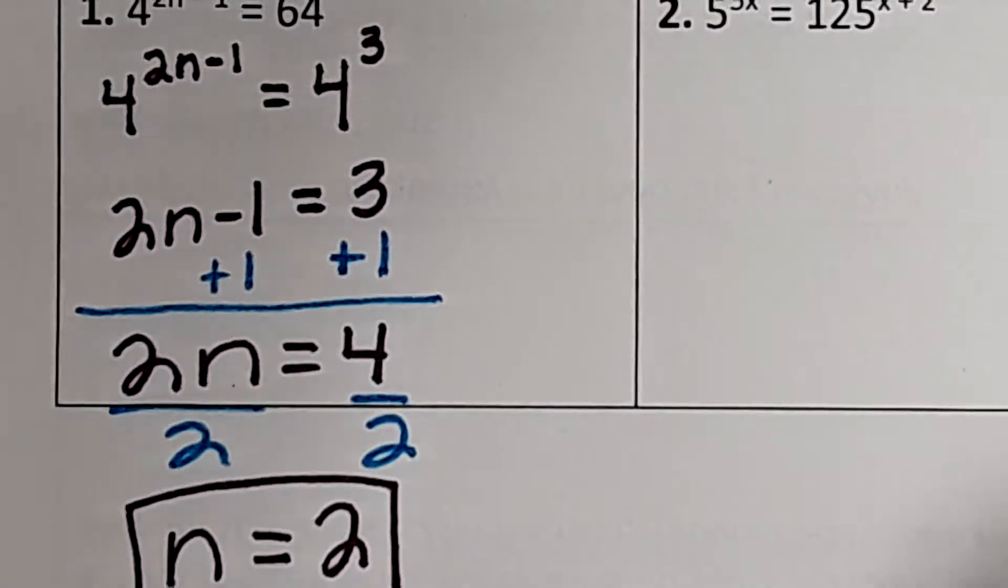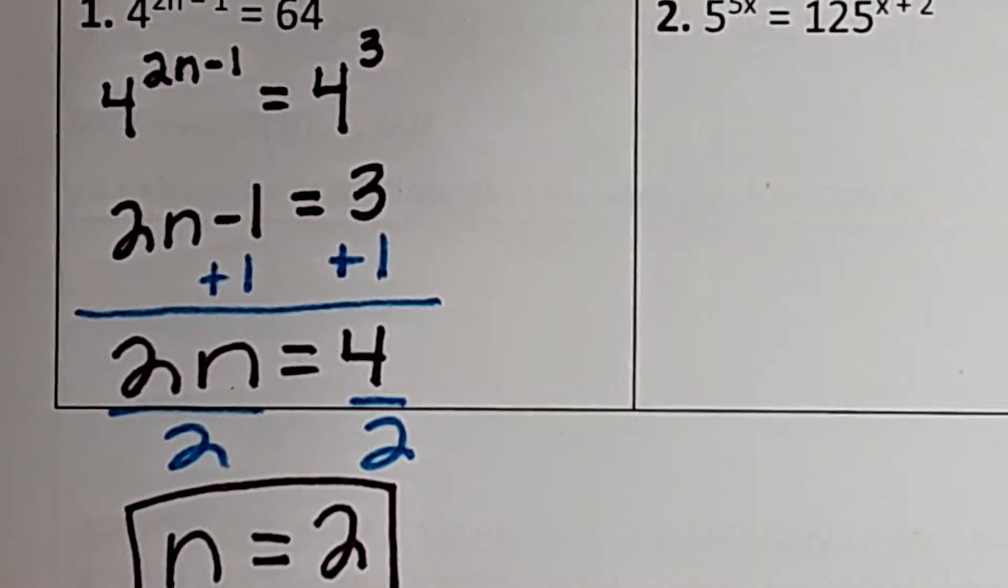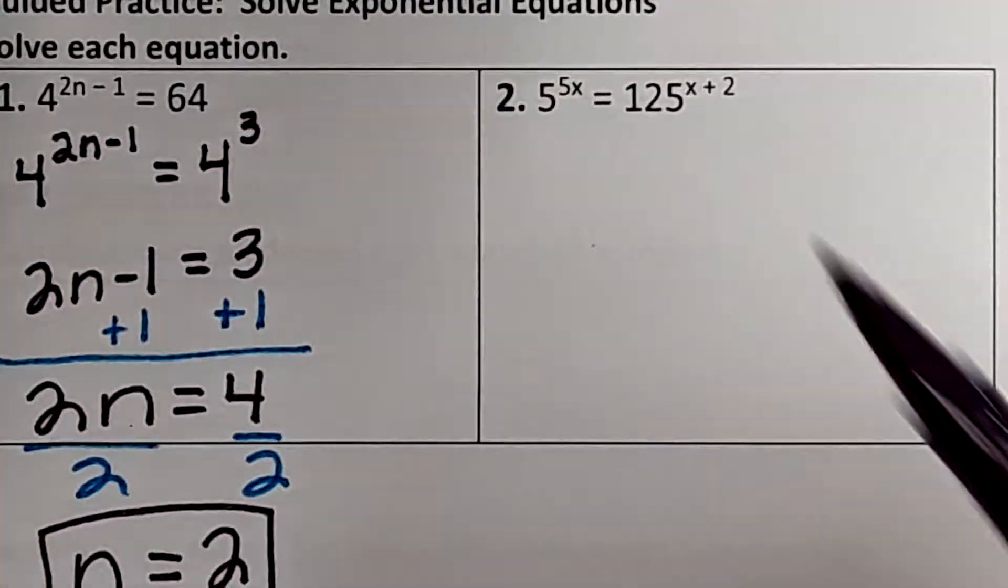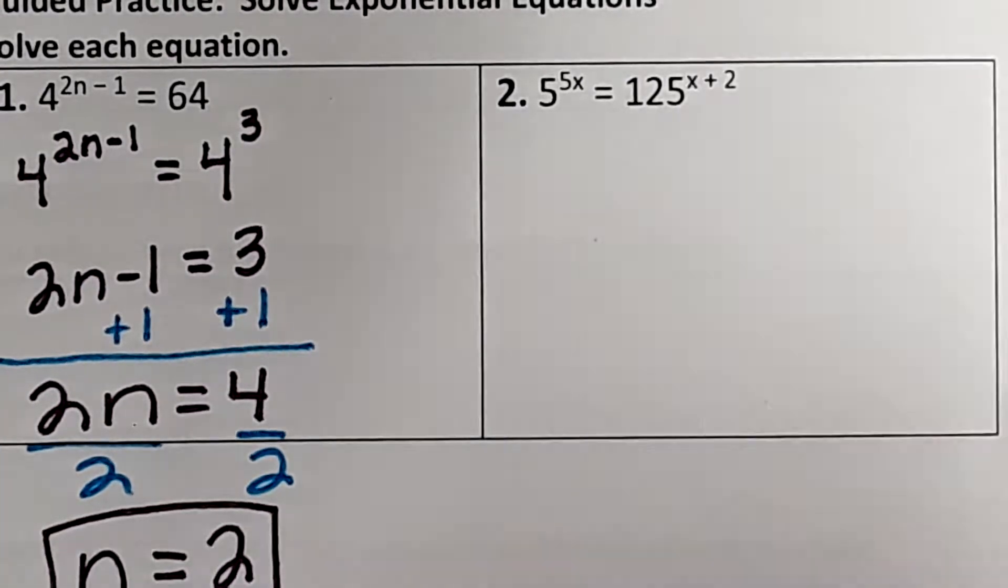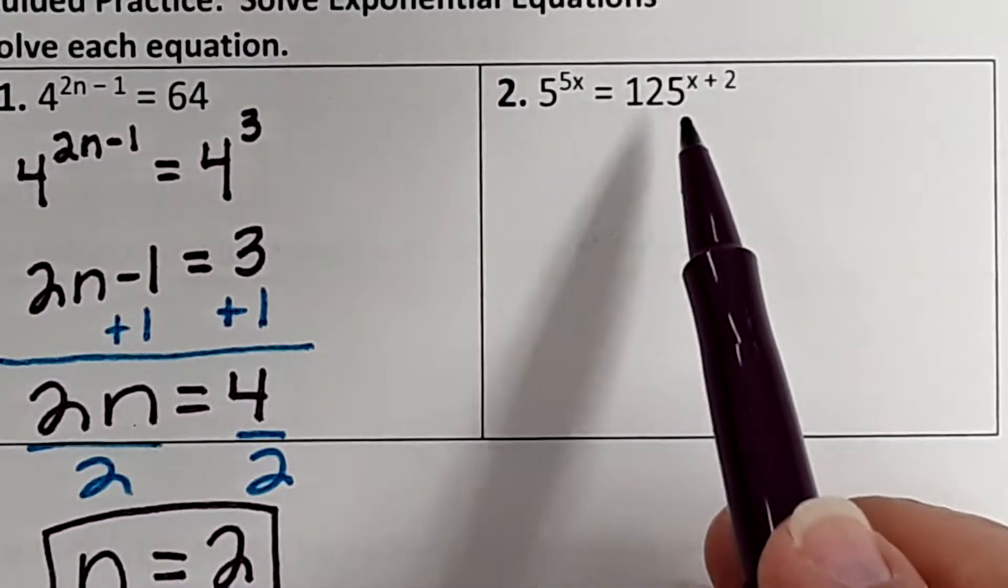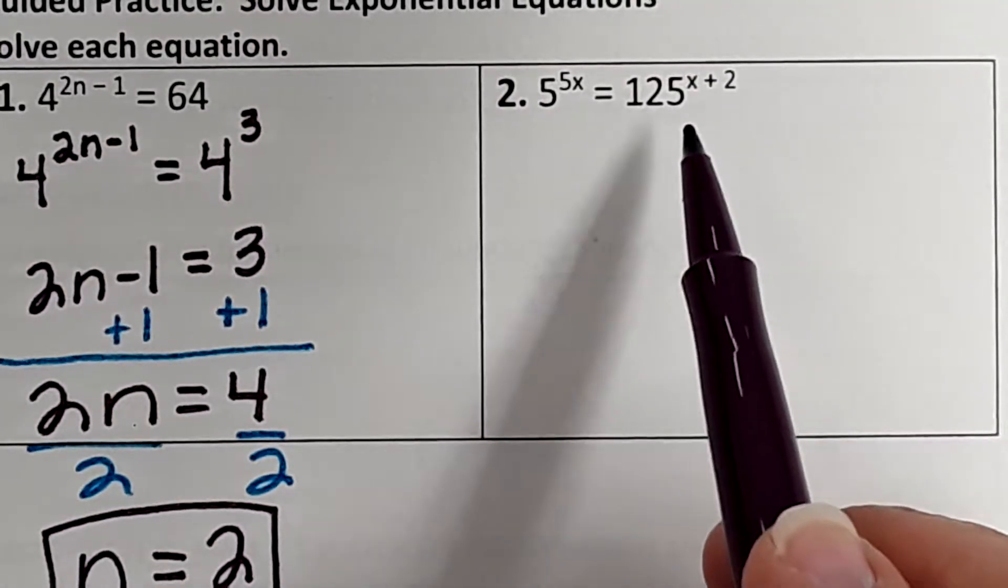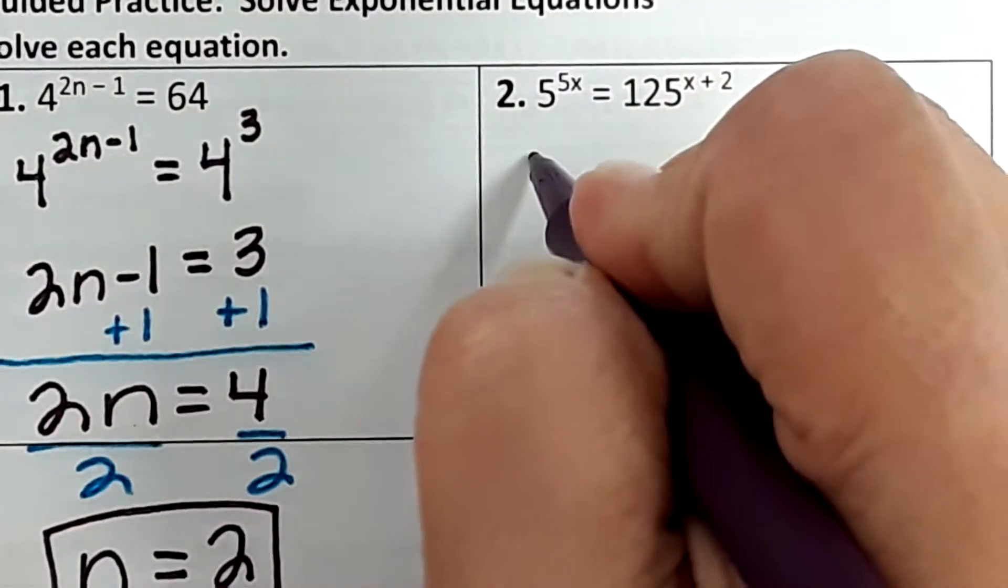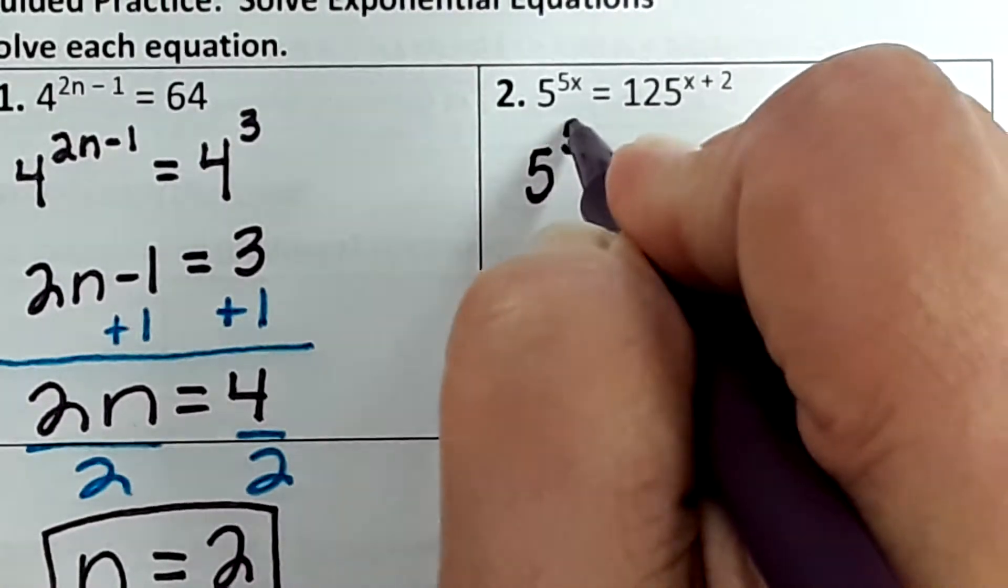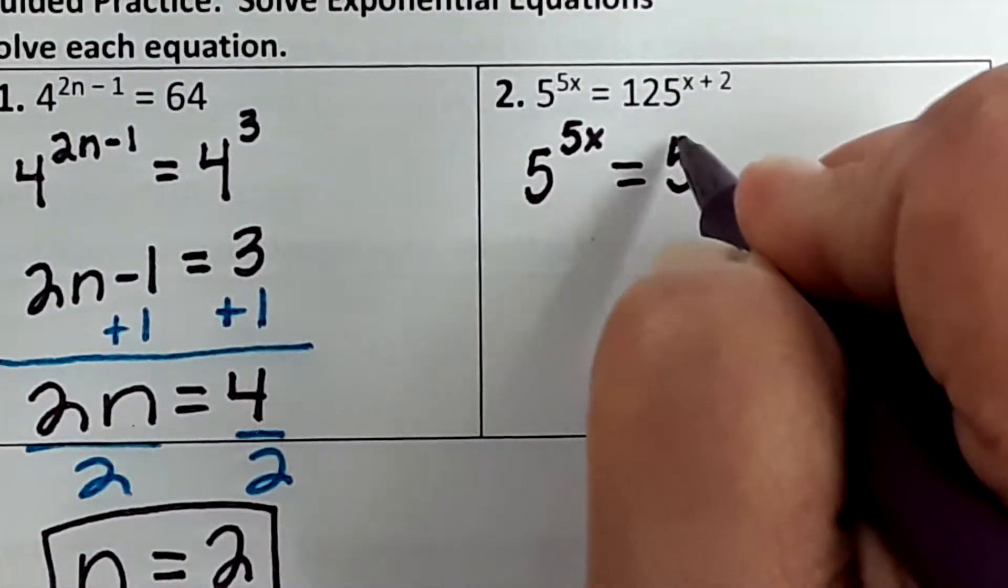You ready for example 2? So 5 is as low as it can go. 5 to the first power is 5. You can't rewrite 5. 5 is the smallest it can go. 4 you could have written it as 2 squared. So is there a way to rewrite 125 as a 5? 5 cubed. So we're going to rewrite it. This remains as 5 to the 5x equals 5 cubed.